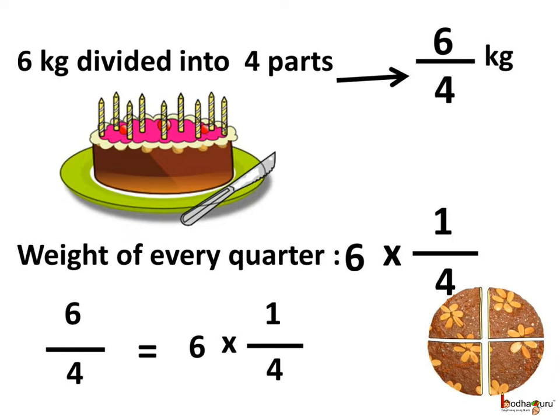So, 6 by 4 is actually 6 multiplied by 1 by 4. Thus, we can perform a division operation as a multiplication operation.